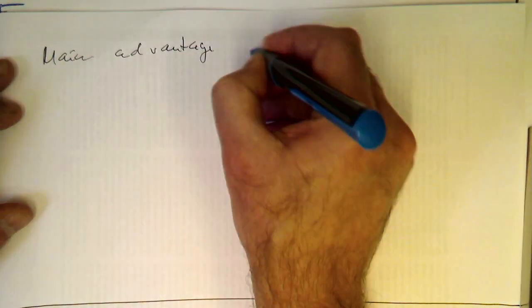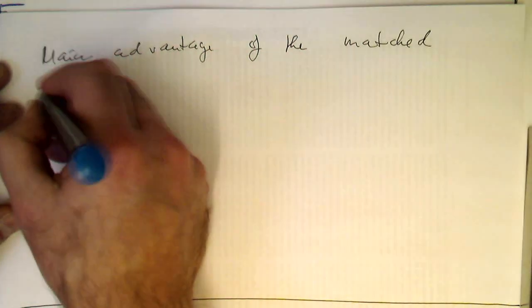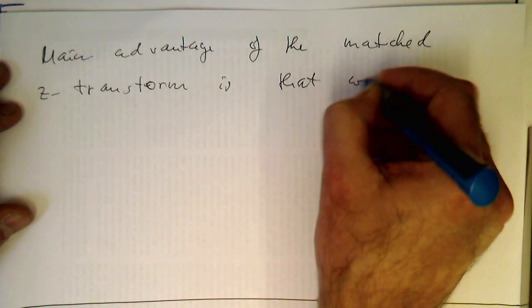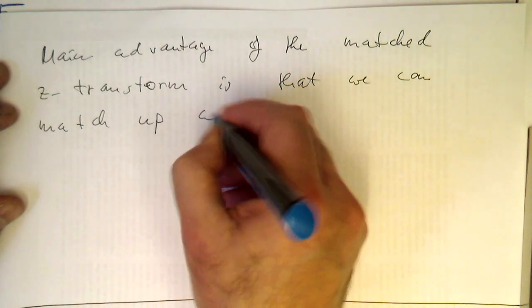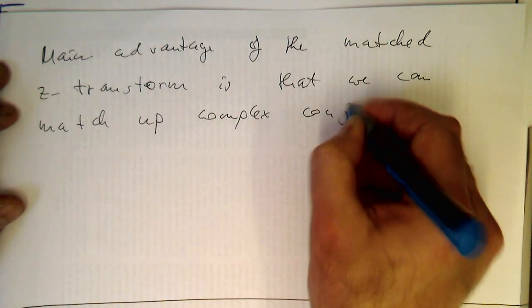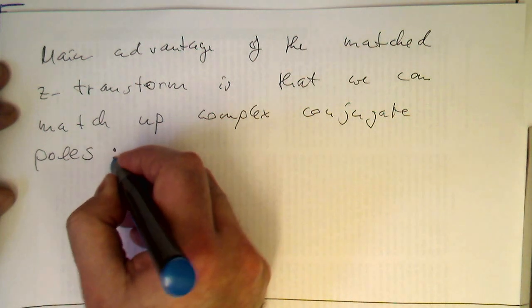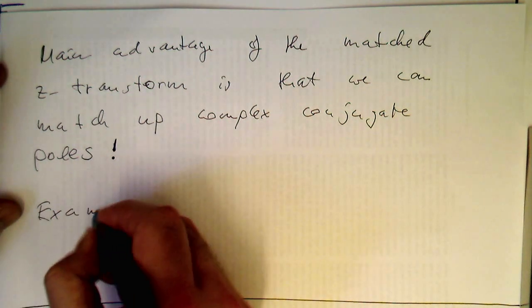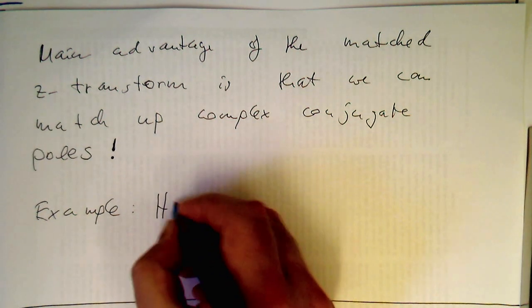The main advantage of the matched Z-transform is that we can match our complex conjugate poles. We will do this again with our example — our transfer function from before, because this makes it clear.